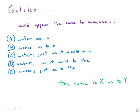In this one about Galileo, we're constructing a comparison. The basic idiom that we want is the same to X as to Y.